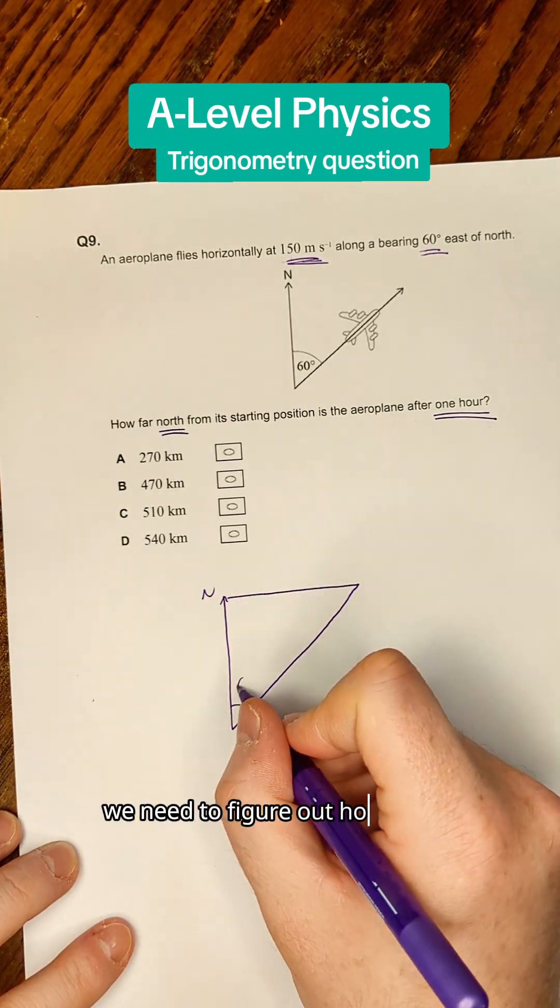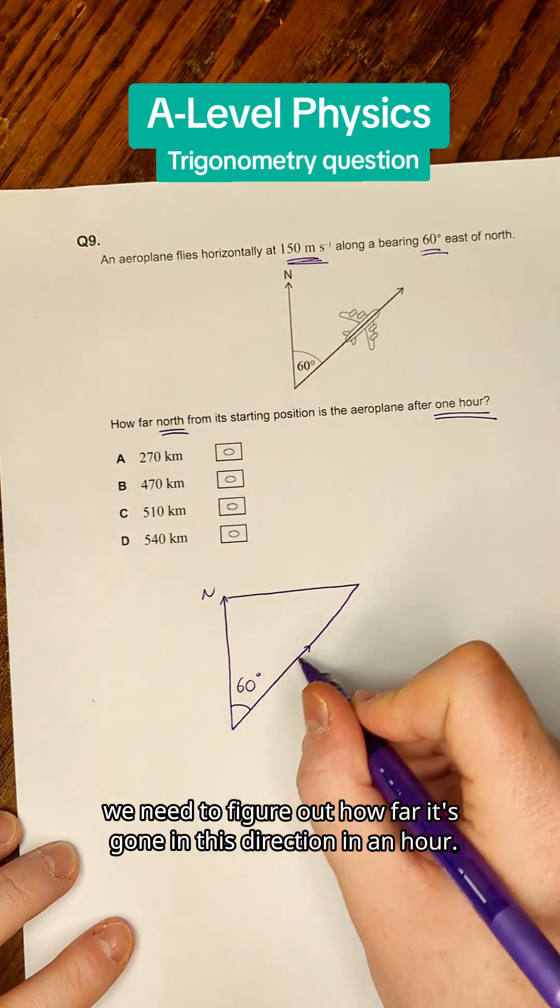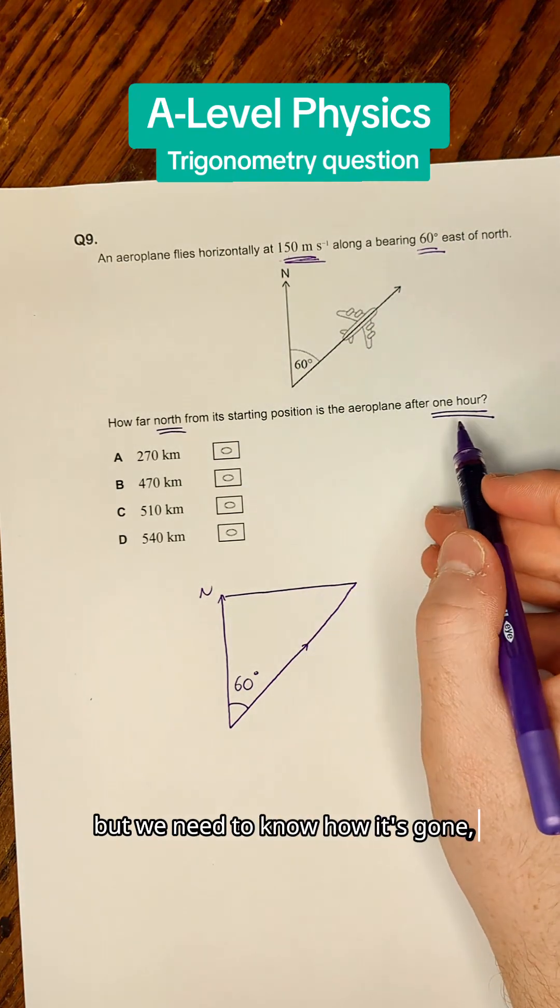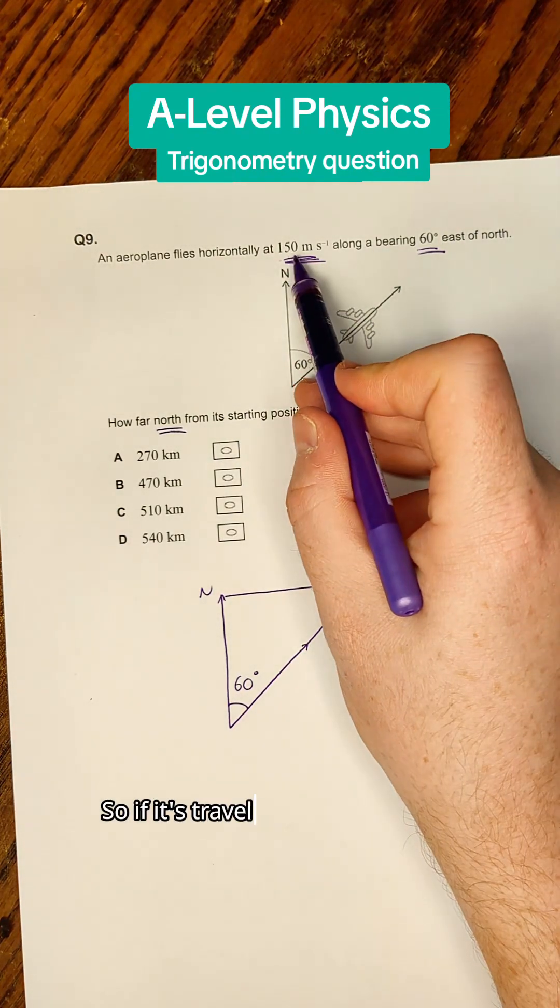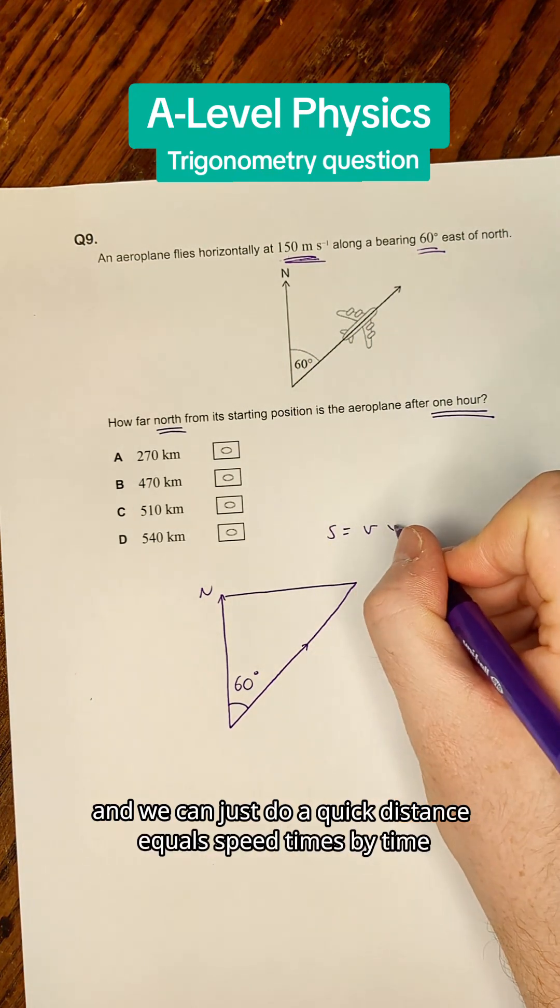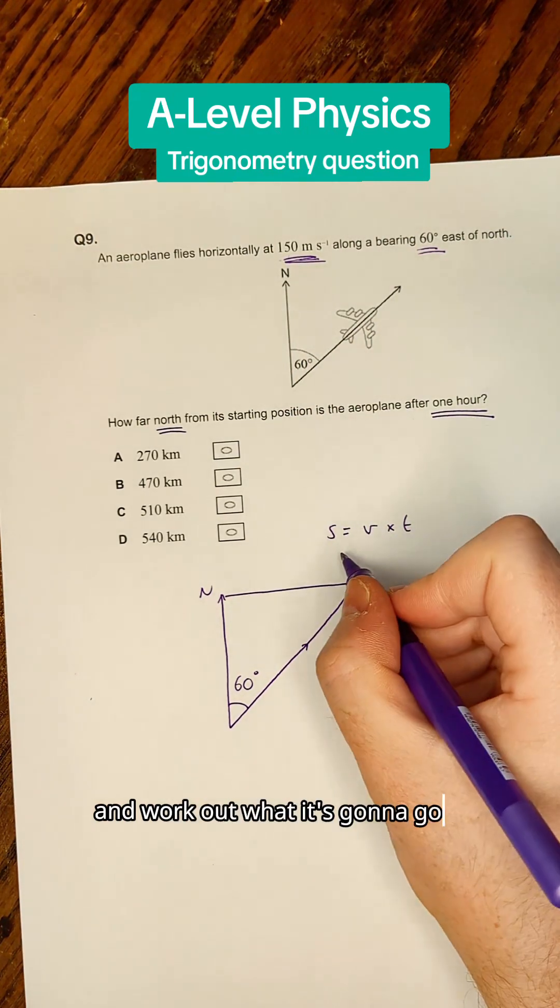First, we need to figure out how far it's gone in this direction in an hour. We know it's traveling at 150 meters per second, so we can use distance equals speed times time to work out what it's going to travel in one hour.